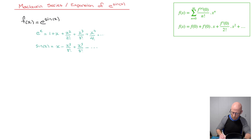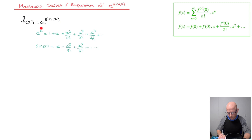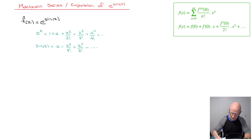Now that we have the first few terms of these two Maclaurin series, let's say we want to find the Maclaurin series for e^(sin x) up to the x⁴ term. Then all we'd have to do is copy the Maclaurin series for e^x and replace every single x by the Maclaurin series for sin x. Since we'll do this up to the x⁴ term, we can already decide to ignore the x⁵/5! term and all terms that follow.